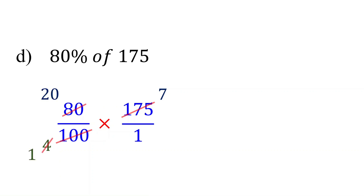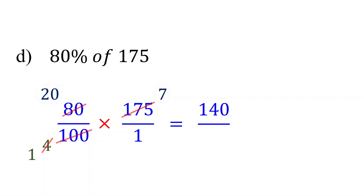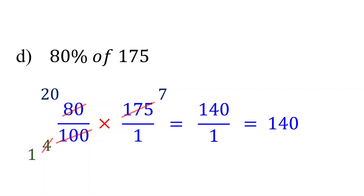Now multiply across. In the numerator, 20 times 7 equals 140. In the denominator, 1 times 1 equals 1. Therefore, 80% of 175 is 140.